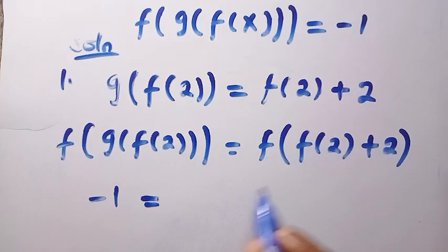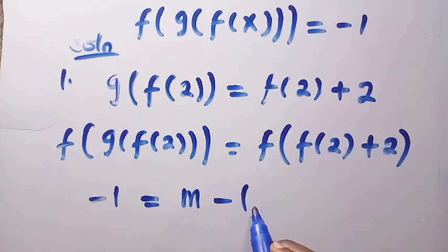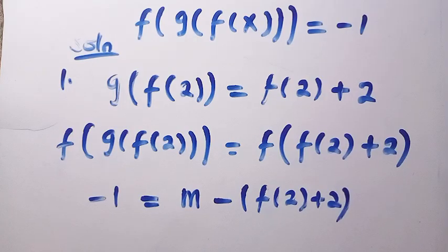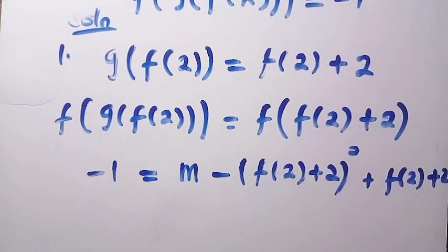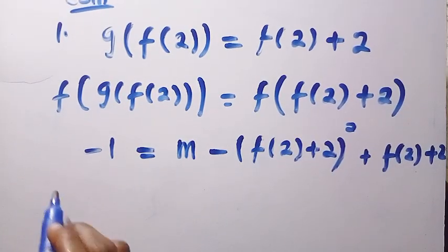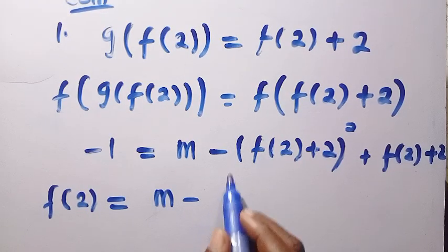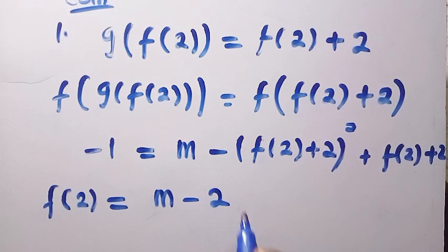So -1 equals m minus (f(2) + 2) squared, plus (f(2) + 2). But what is f(2)? If we look for f(2) from f(x): f(2) = m - 2² + 2, that is m - 4 + 2, which gives us m - 2. That is the value of f(2).